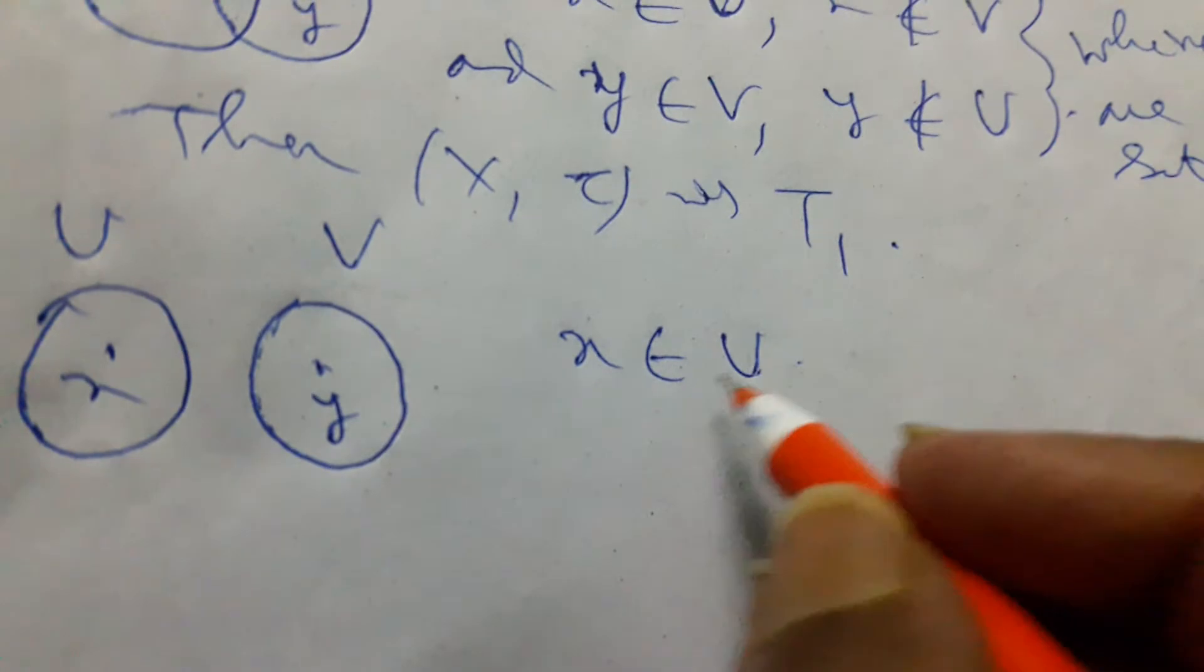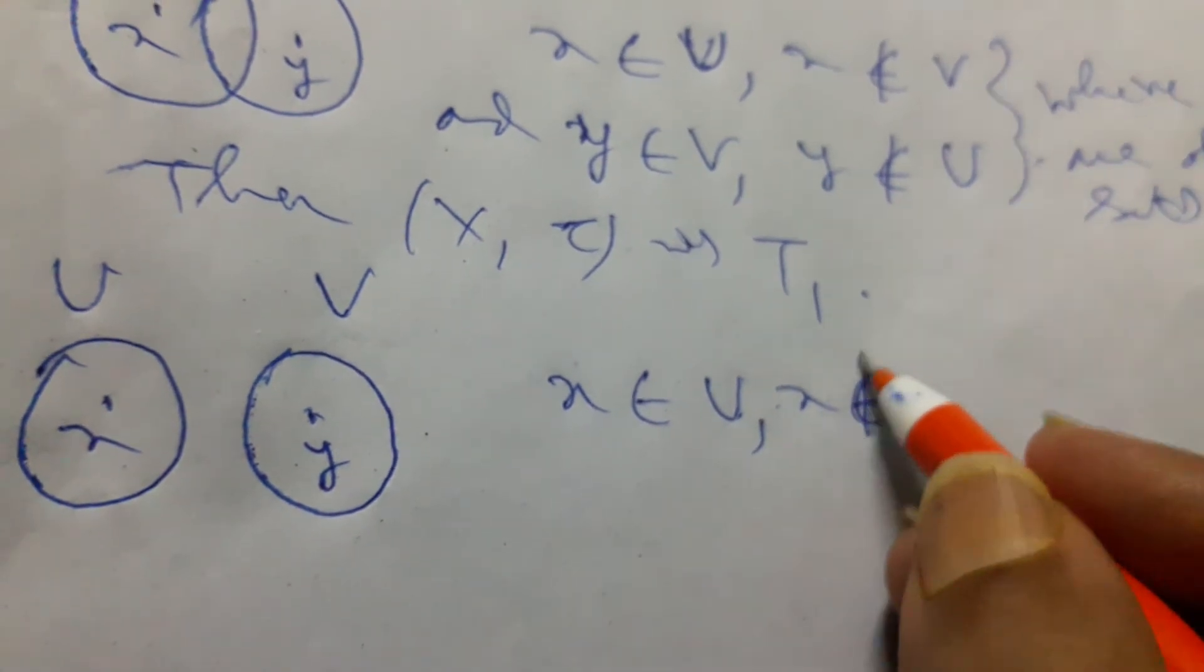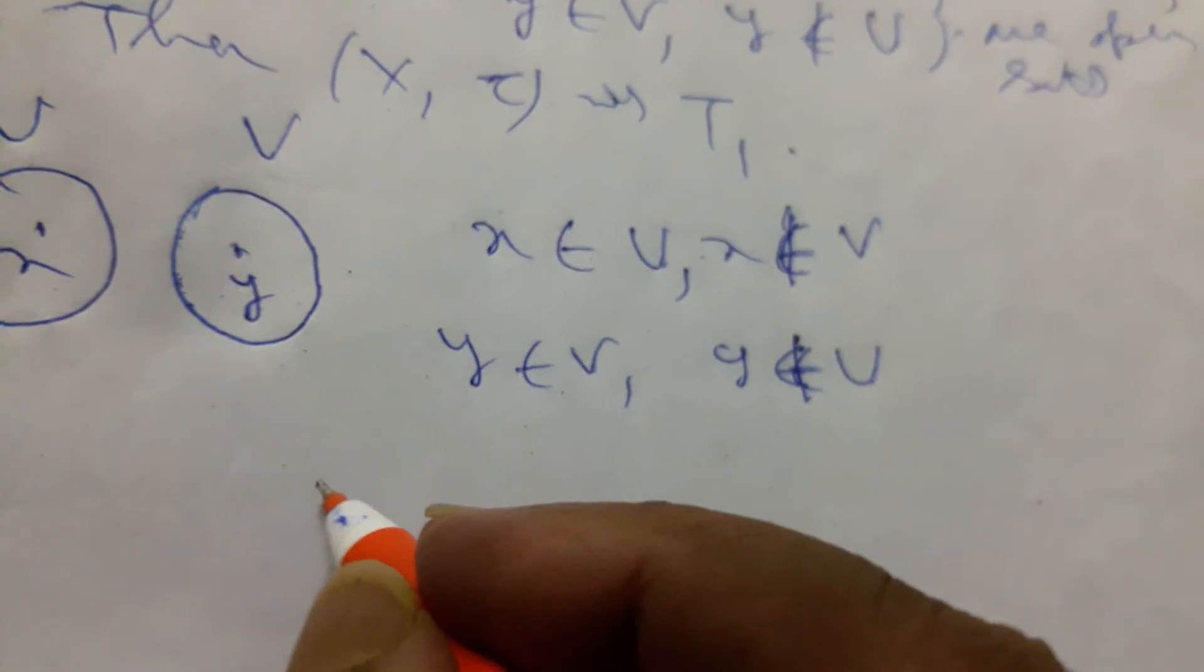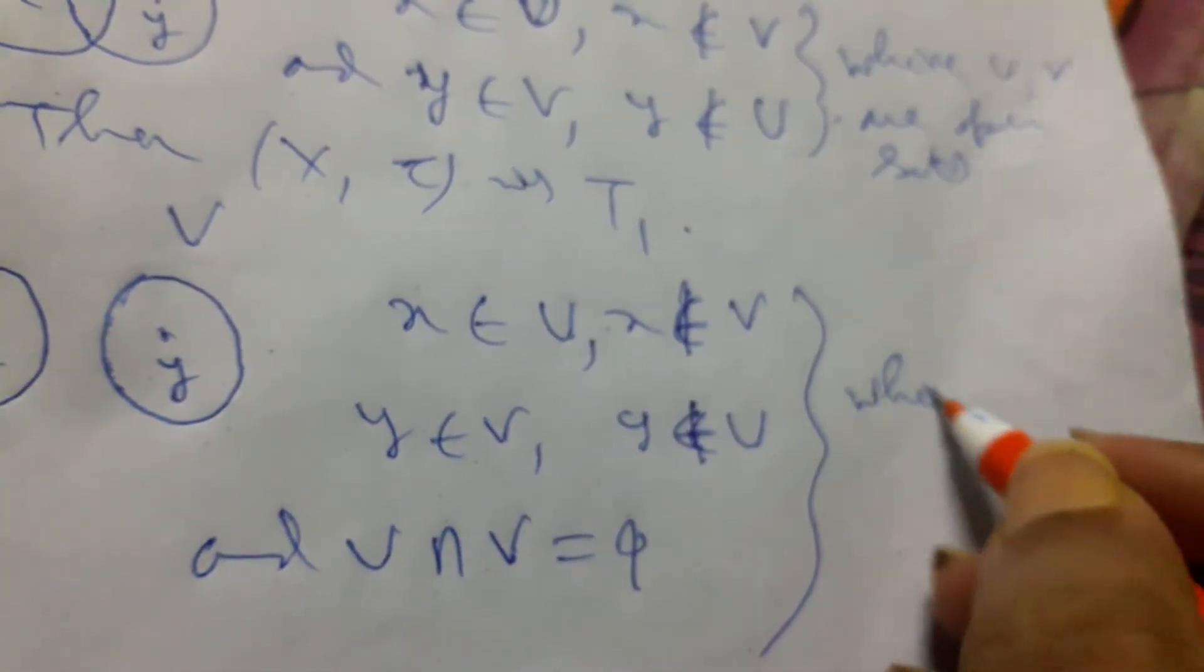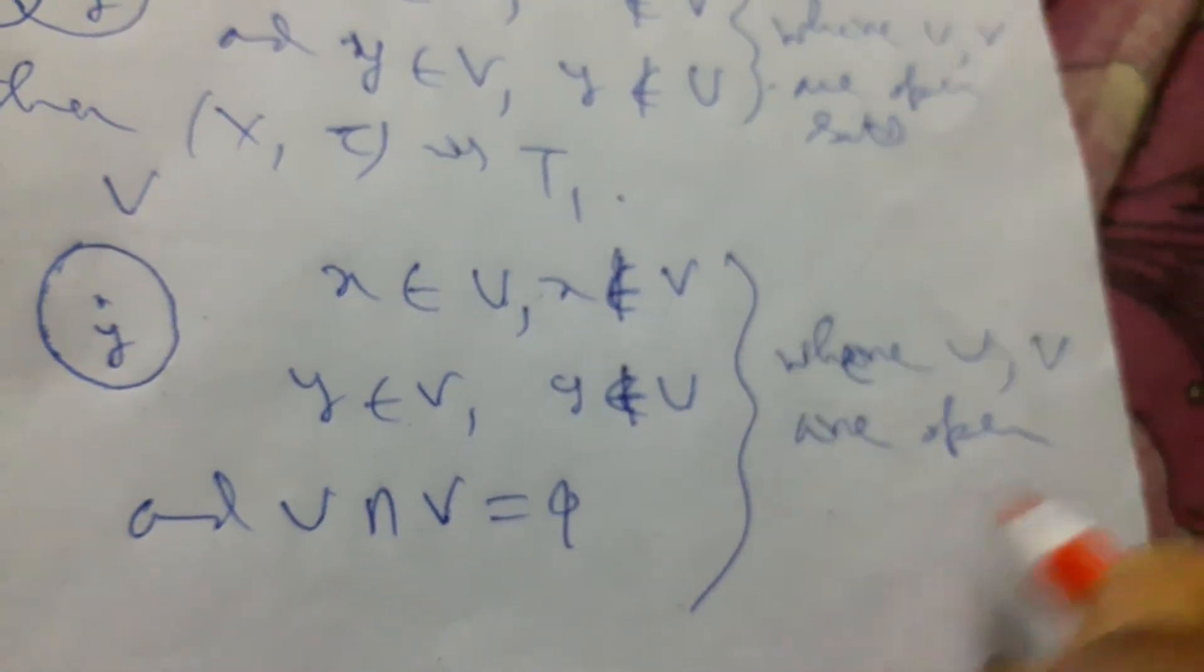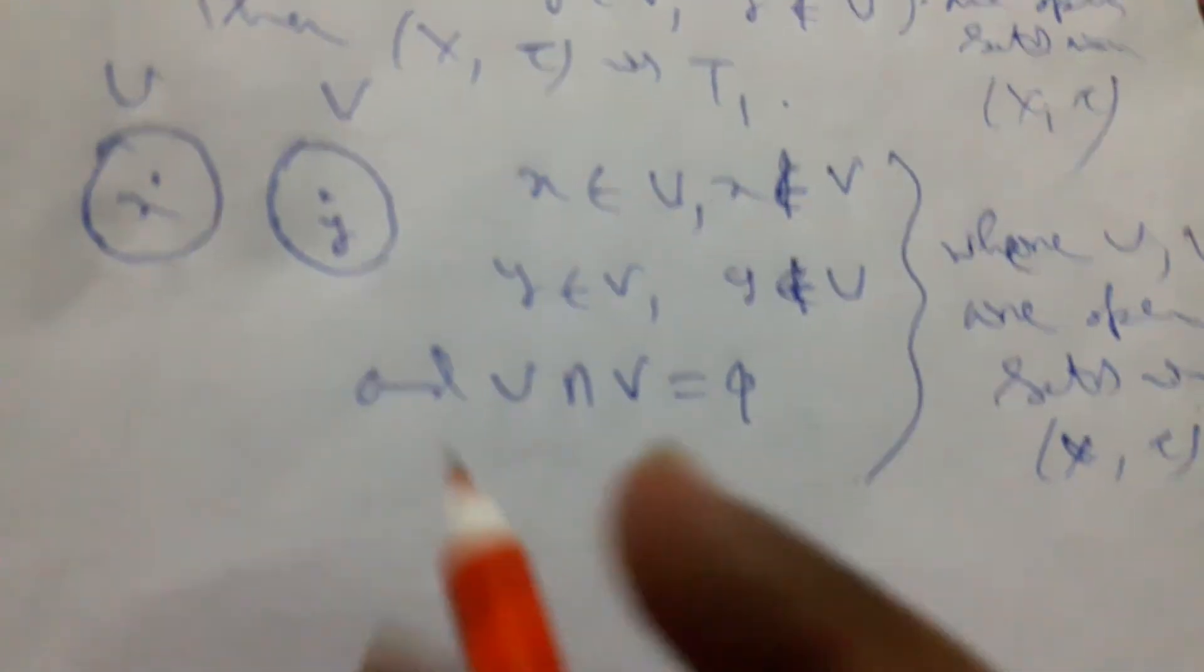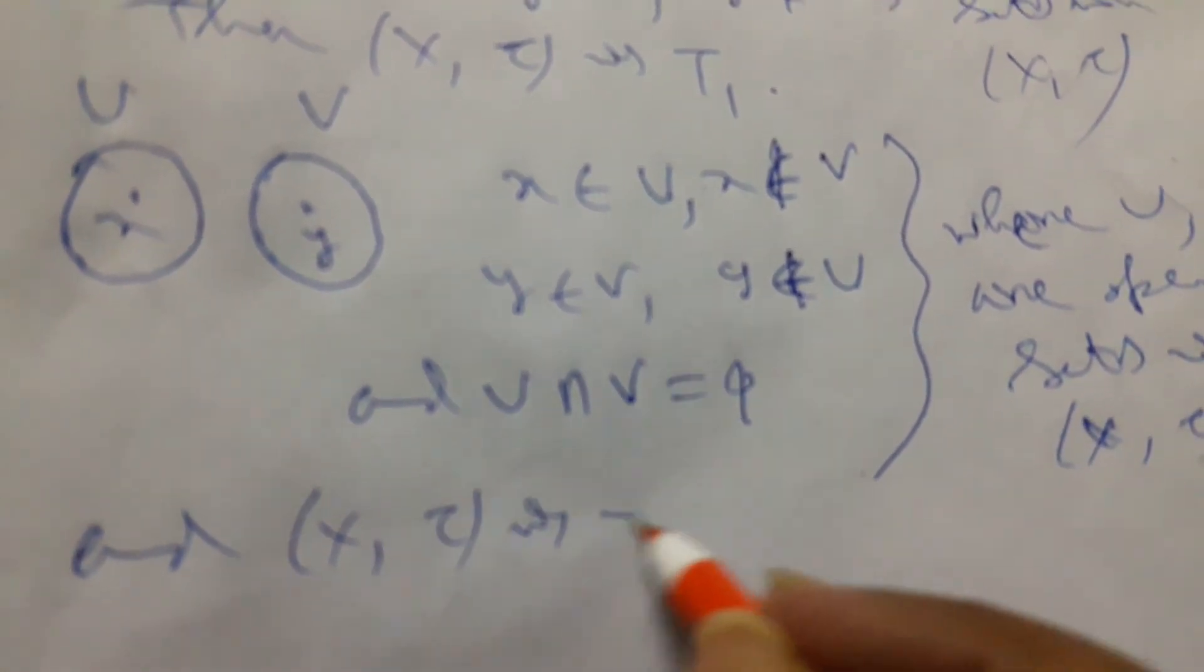Here also, x belongs to U and x does not belong to V. Y belongs to V and y does not belong to U, and U intersection V is equal to phi. Here also, where U, V are open sets in x tau. But if we find, we can see this result, then x tau is T2, and it is clear.